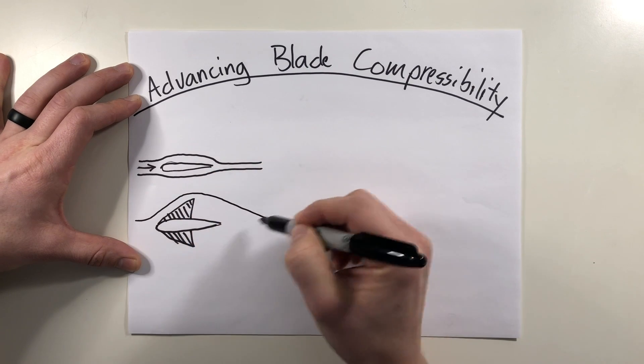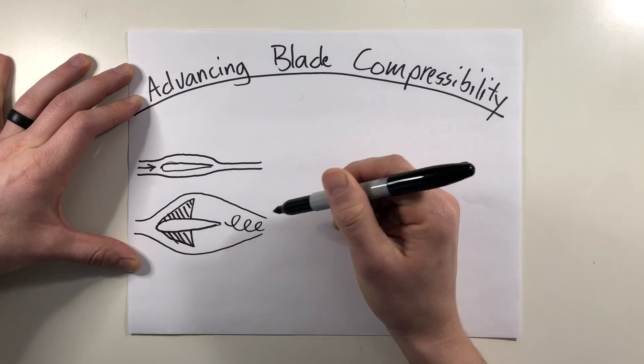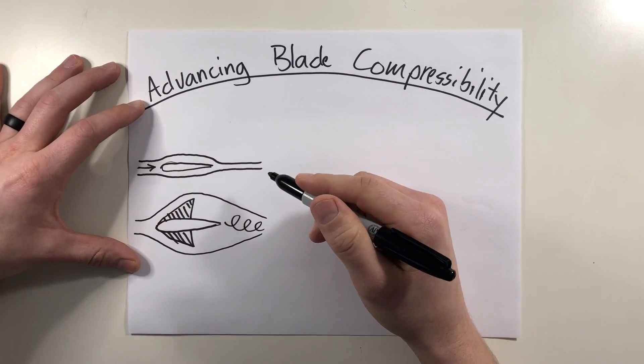So now the flow around the airfoil looks something like this, where it's very turbulent, because it's not really using the shape of the airfoil, it's a shock wave forming around that airfoil.